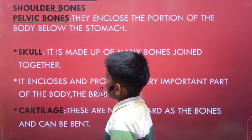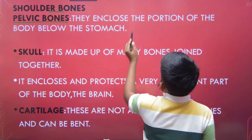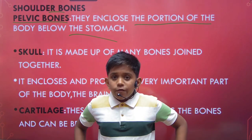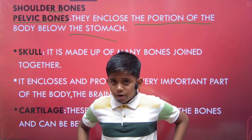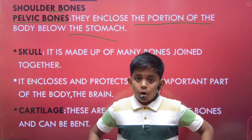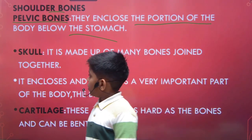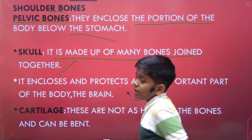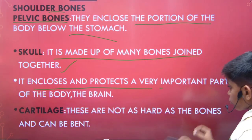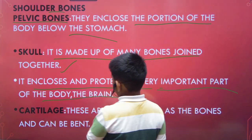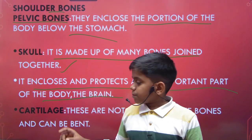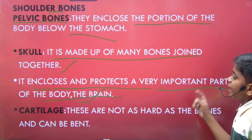Next we have shoulder bones and pelvic bones. The pelvic bones include the portion of the body below the stomach — if you put your hand there you can feel a hard bone. Next is the skull, which is made of many bones joined together, making it a fixed joint. The skull encloses and protects the most important part of the body — the brain, which is also called the computer of the human body.